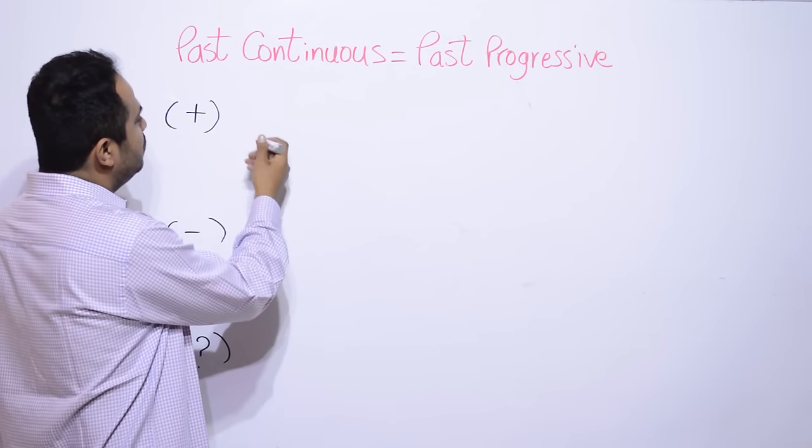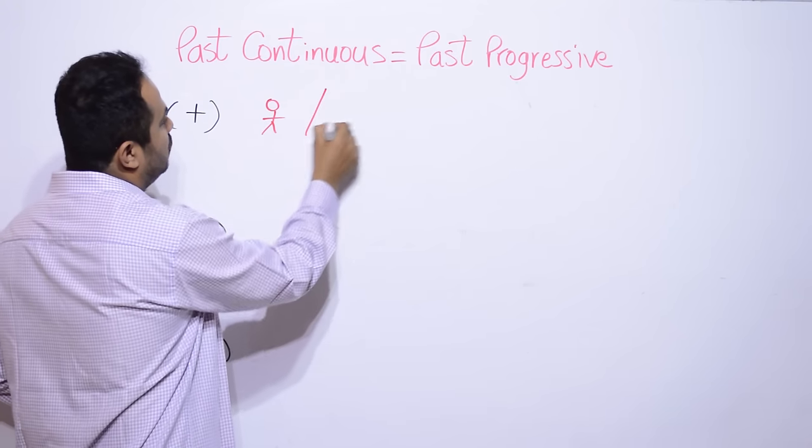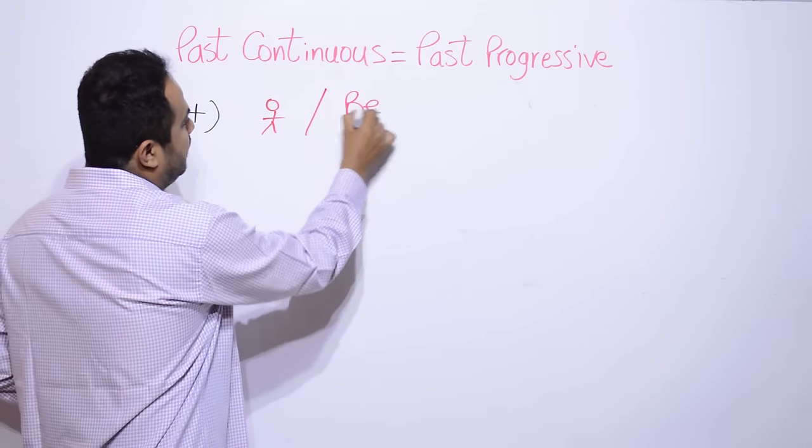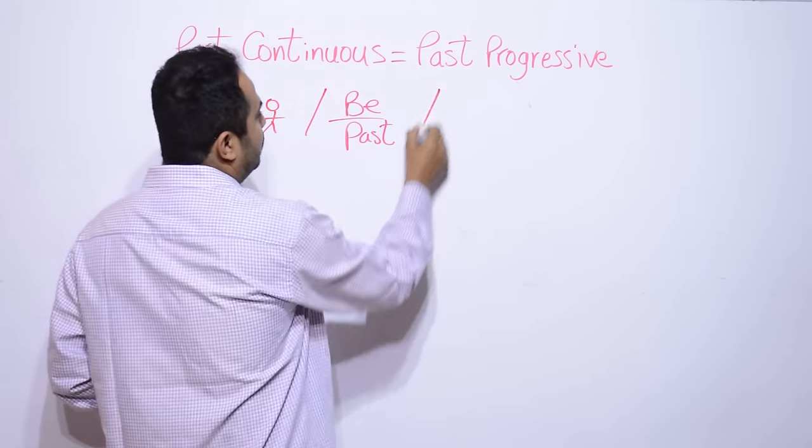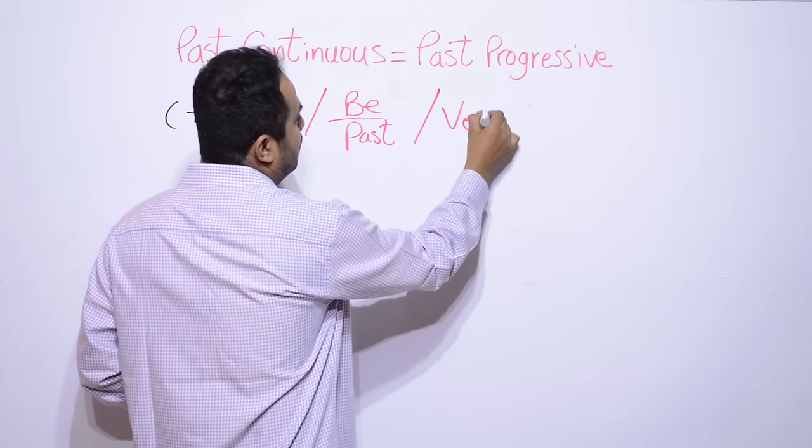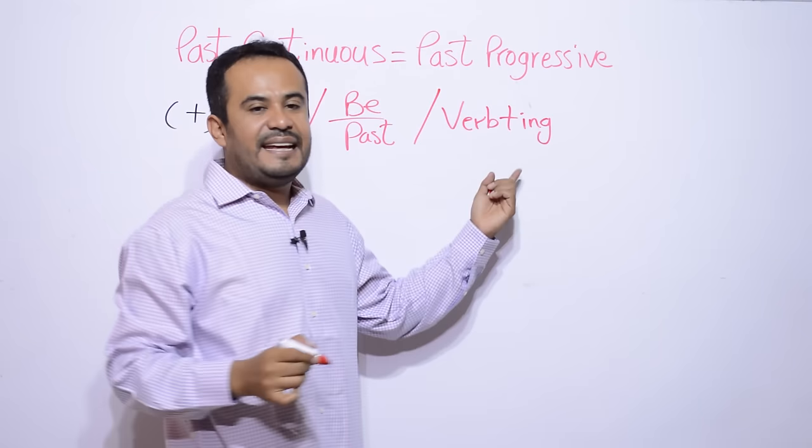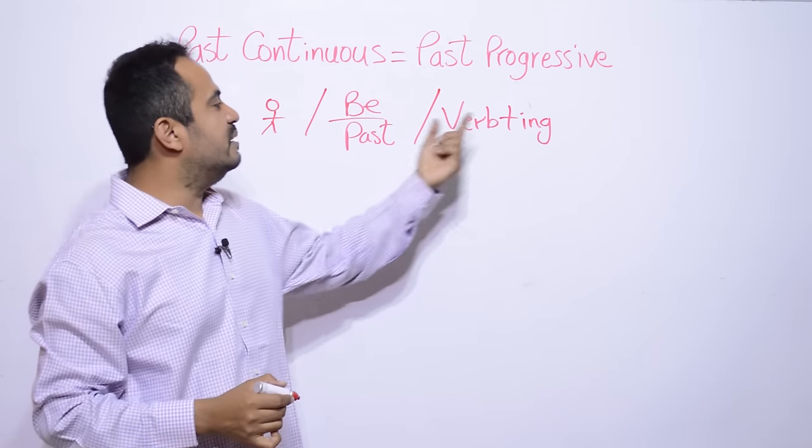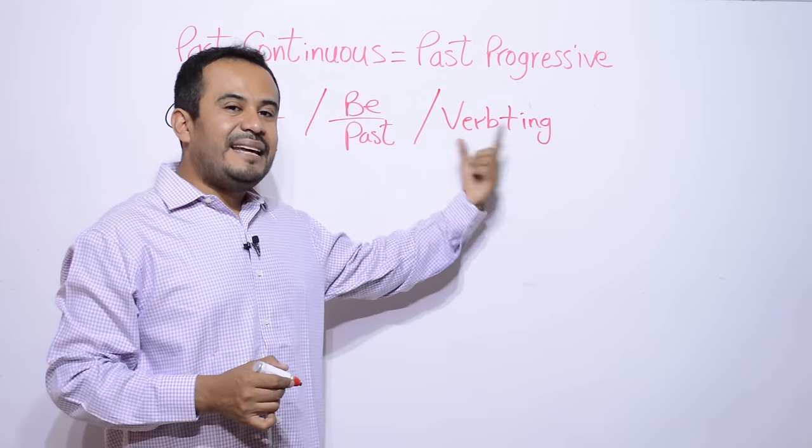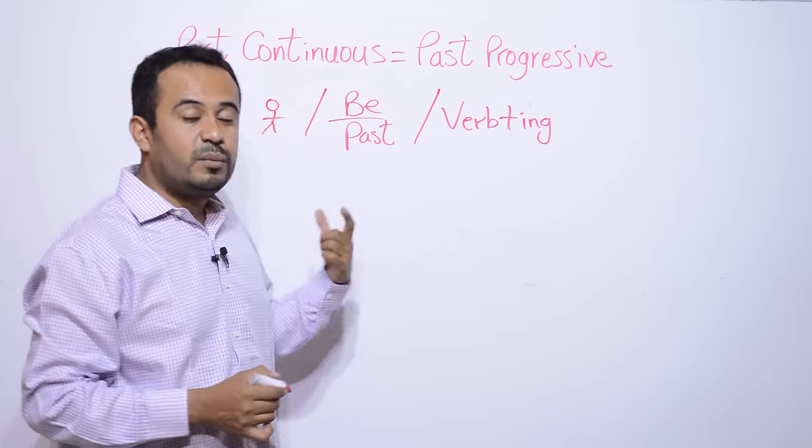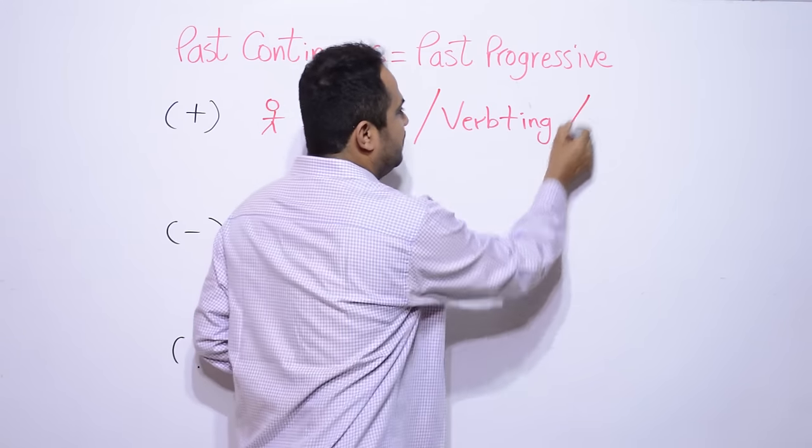Tenemos, por ejemplo, modo afirmativo. Tenemos un sujeto. Después, un verbo to be, pero en pasado. Después vamos a poner un verbo, pero más la terminación ing, ing. Siempre, siempre que uses verbo to be, tienes que usar verbo con ing. ¿Sí? Te voy a decir por qué. Por ejemplo, bueno, después aquí sigue un complemento.